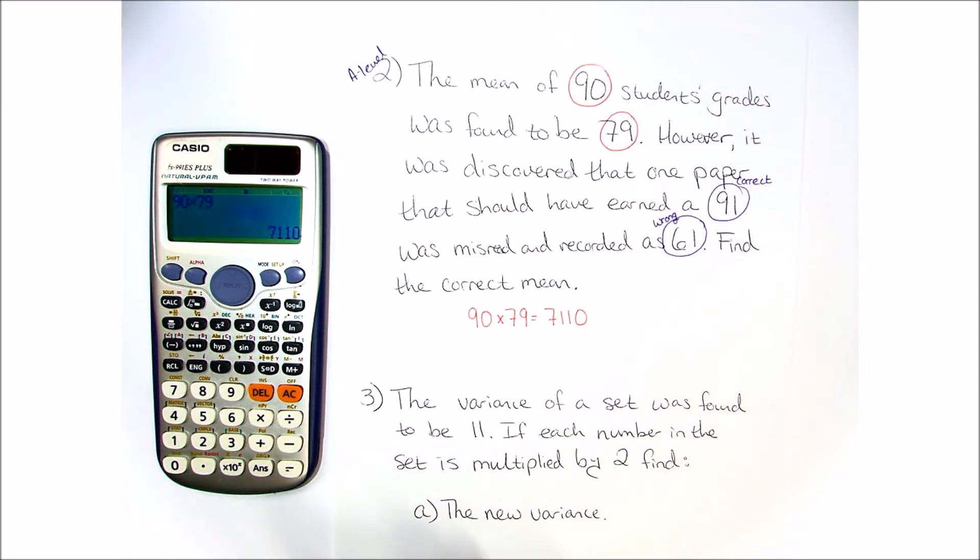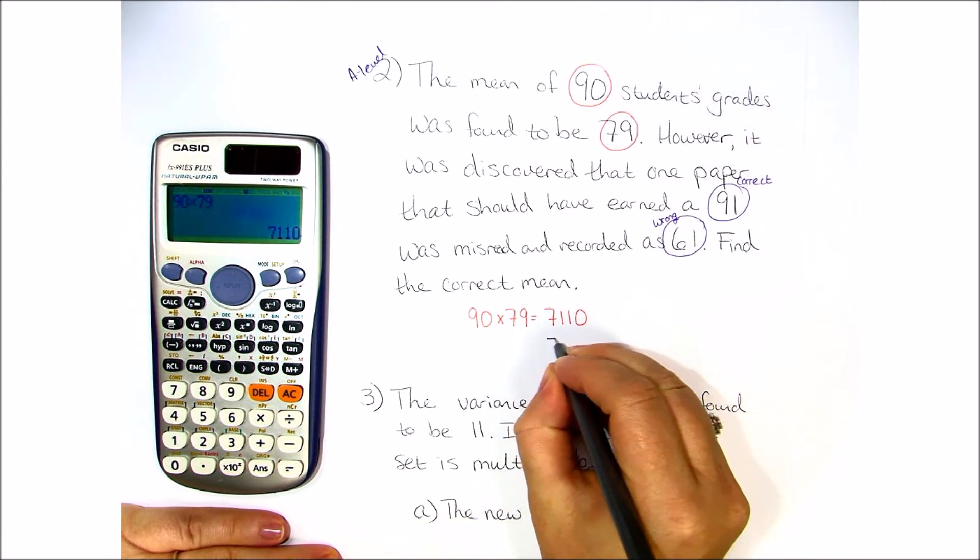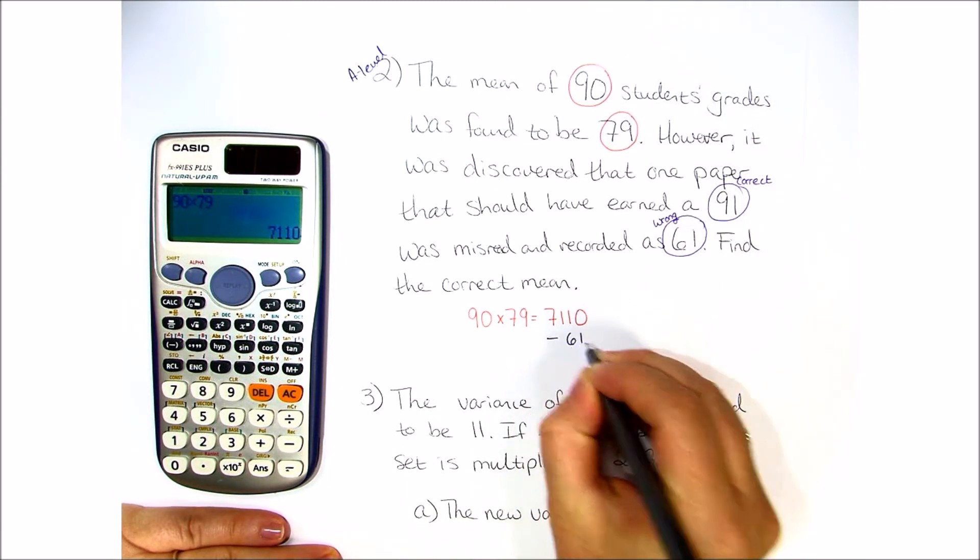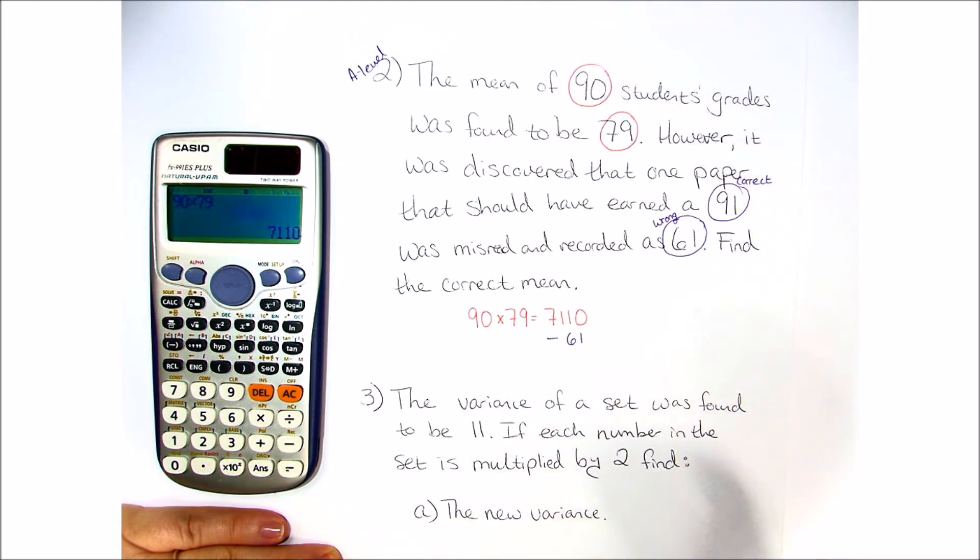Now once we get this, we need to make some changes. We need to take out the incorrect score. We made the mistake. We have to take it out.